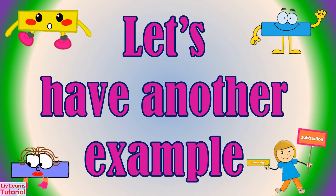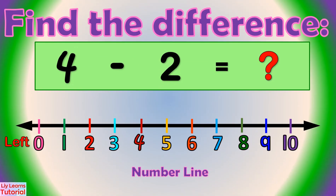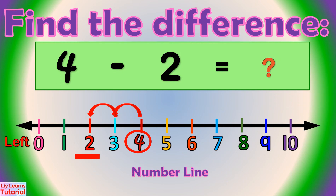Let's have another example. Find the difference of 4 minus 2. We start from the minuend, which is 4. Then we move 2 numbers to the left: 1, 2. We land on 2. So the difference of 4 minus 2 is 2.